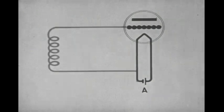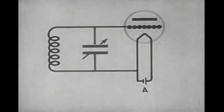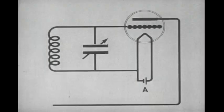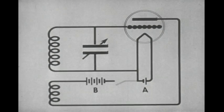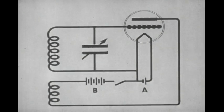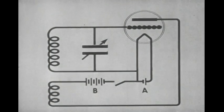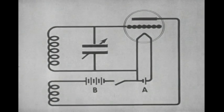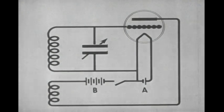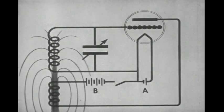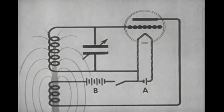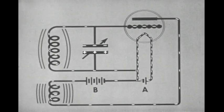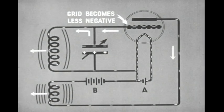The vacuum tube is also used in the transmission or sending station to generate radio-frequency currents. In a tickler-type oscillator, the grid circuit contains a coil and a variable condenser. The plate is connected through a coil, B battery, and a key to the filament circuit. When a current flows through the plate coil, the magnetic field sweeps across the grid coil and induces a voltage in it. As the plate coil field builds up, electrons flow away from the grid.